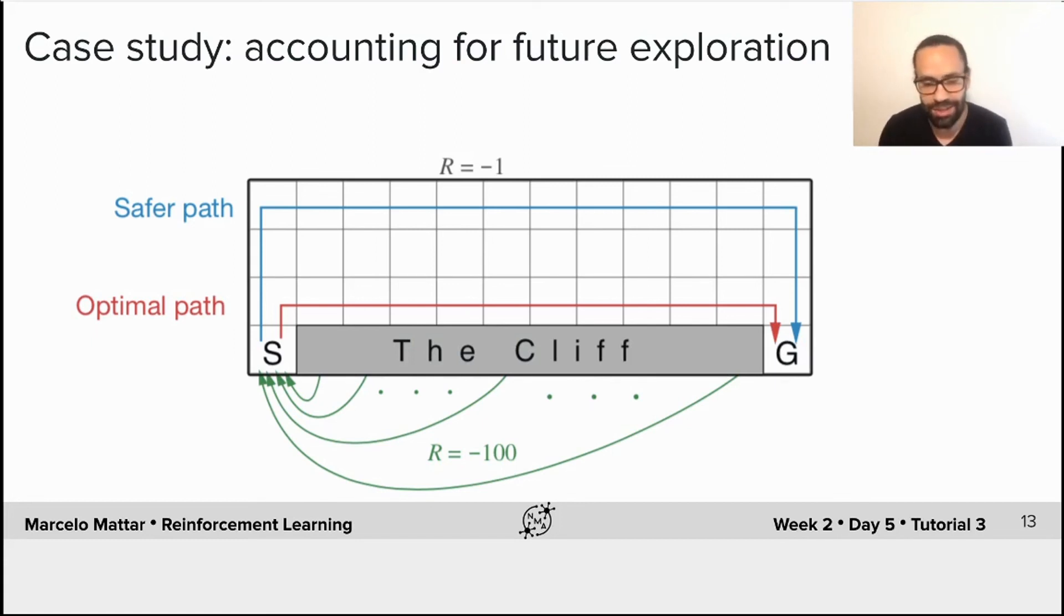So in some sense, the agent is neglecting any kind of randomness in the environment and being too optimistic about its future actions. In contrast, SARSA can sometimes incorporate the randomness in the agent's own behavior when estimating action values. This in turn results in a safer policy, which is shown here in blue.